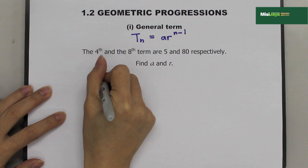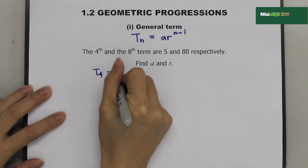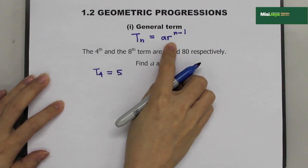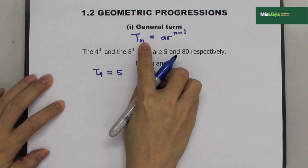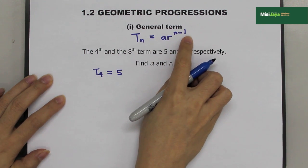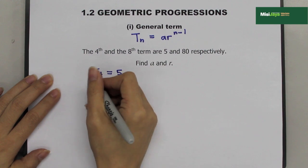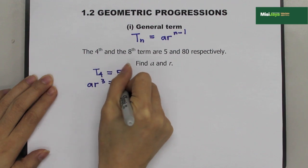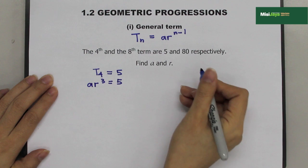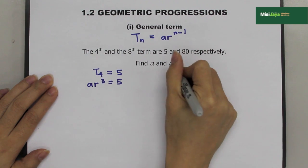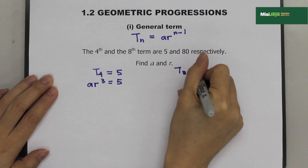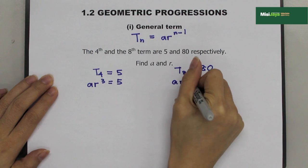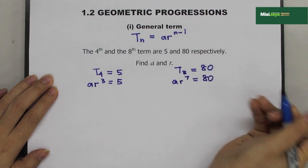Writing T4 equals 5: from the formula with N equals 4, N minus 1 equals 3, so AR to the power 3 equals 5. And T8 equals 80: AR to the power 7 equals 80. Now I have two equations.